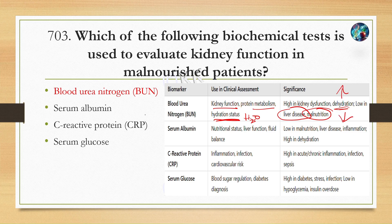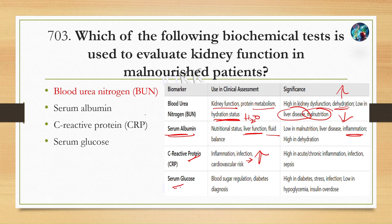The second option was serum albumin, which is generally used to assess liver function and fluid balance. CRP is used as a marker of inflammation. So, moving on to the next question.